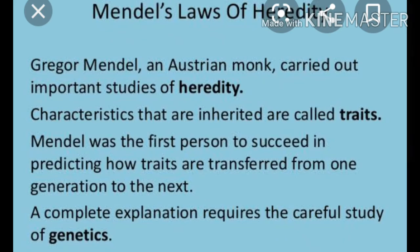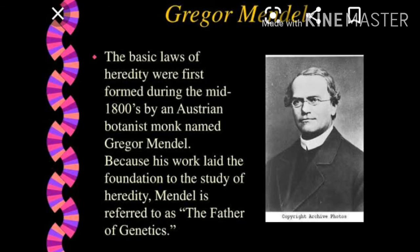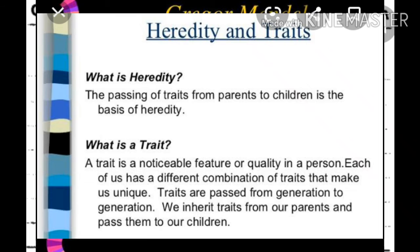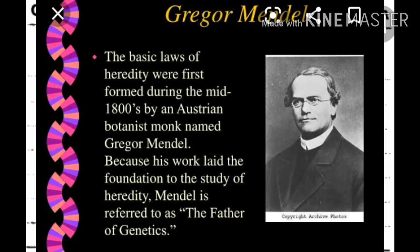Mendel's work was ignored at that time, perhaps for the following reasons: he published his work in an obscure journal, and communication was not easy in those days, so his work could not be widely publicized. Scientists failed to notice his work because the scientific world was busy with the controversy arising from Darwin's theory of the Origin of Species. His idea was ahead of his time, and ignorance prevailed about the cytological basis of heredity. His concept of factors or genes as stable and discrete units controlling trait expression, and of allele pairs that did not blend, was not accepted as an explanation for the apparently continuous variation seen in nature.